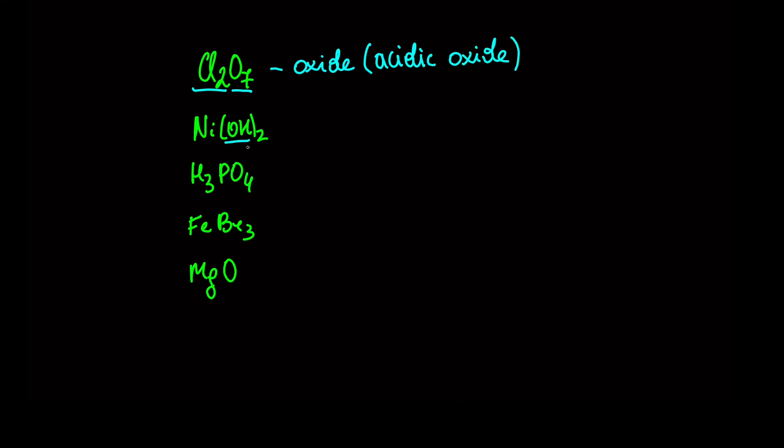Ni(OH)2 has an OH group, so it's hydroxide. In H3PO4, we see H at the beginning. So it's definitely an acid.